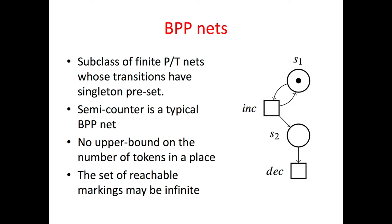The semi-counter on this picture is a typical BPP net. Note that there is no upper bound on the number of tokens in a place, for instance S2 in this net, and that the set of reachable markings may be infinite.